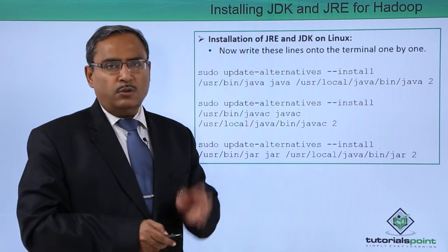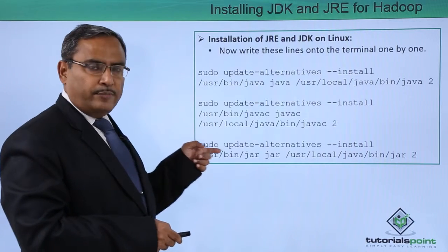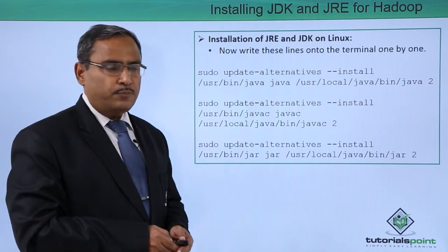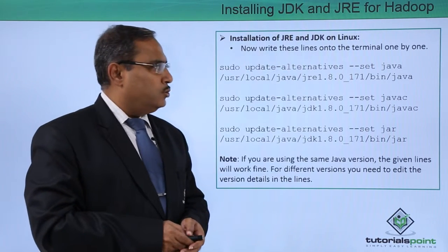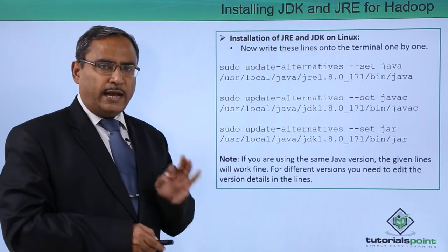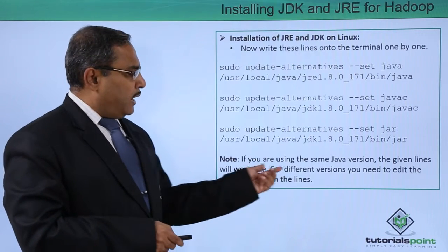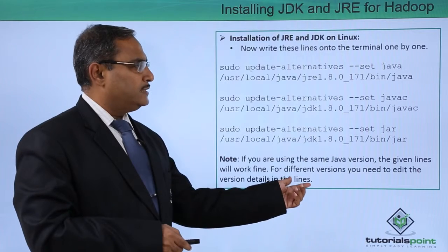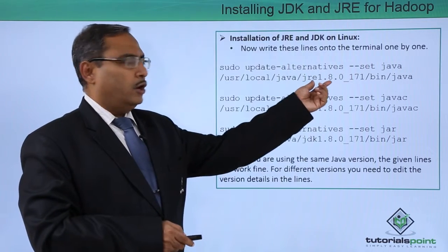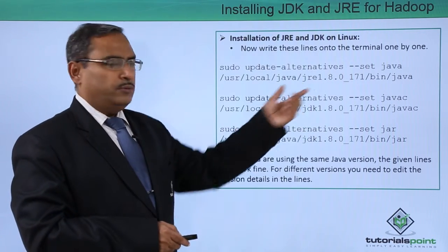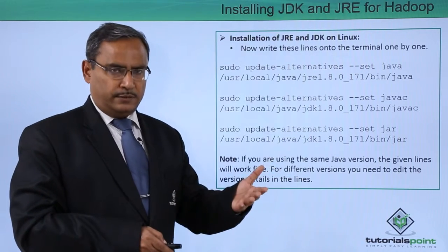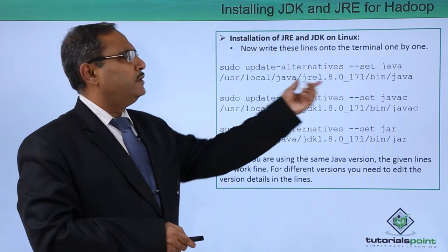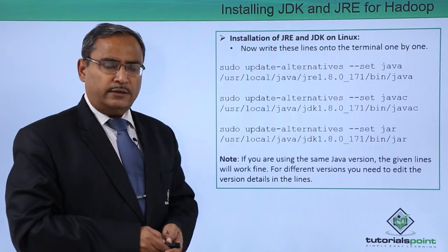Write these lines onto the terminal one by one. These are the additional lines to be written onto the terminal prompt after saving the gedit file. They are to be typed in order maintaining the correct syntax. If you are using the same Java version, the given lines will work fine. For different versions, you need to edit the version details — for example, jre1.8.0_171. Go to your /usr/local/java folder to find the respective folder names and update the commands accordingly.